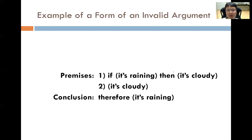Let's look at an example. Premise 1: if it is raining, then it is cloudy. Premise 2: it is cloudy. Conclusion: therefore it is raining. 'It is raining' is P, 'it is cloudy' is Q — this is in the form of an invalid argument. Even if the premises are true, we do not have to accept the conclusion as true. Premise 1 we can agree on. But if we look outside and see it is a cloudy day, can we conclude it is raining? No, because any cloudy day doesn't mean it has to be raining.